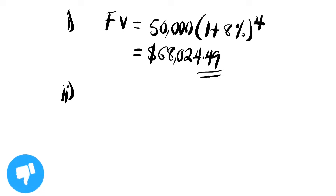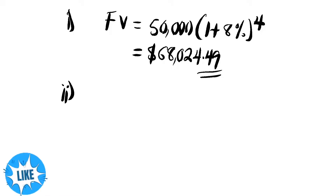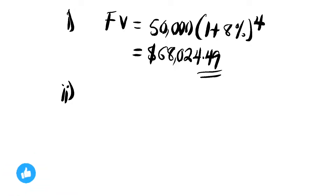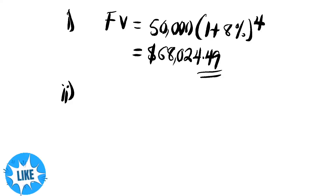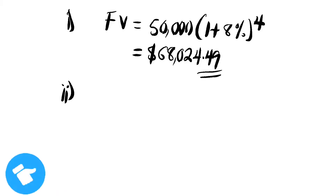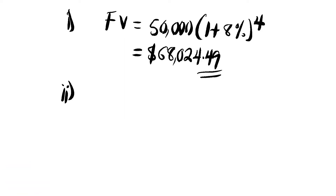For Part B, we are asked to compute the present value of this investment. The present value is the discounted future cash flow, which is $68,024.49 USD. We want to know the worth of the investment now. The present value means discounting that future cash flow into present terms. The difference is that the cost of investment is the actual money or resource it costs to invest in a project, whereas present value is about discounting future cash flows.